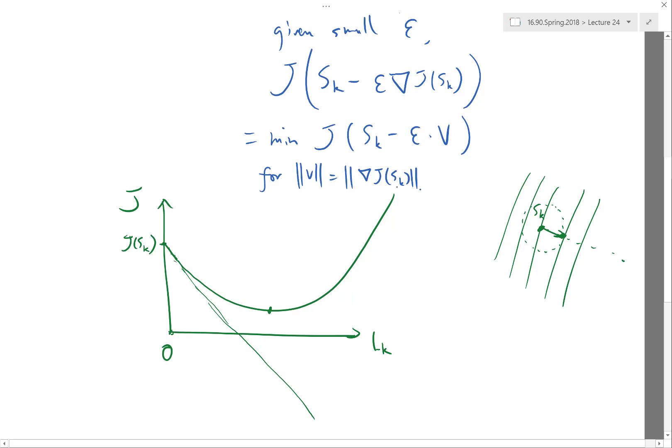But if you want to take a larger step, if you want to obtain a larger drop in the objective function per step, then it may not be the direction that gives you the best drop for a small step. And to figure that out you need the Hessian.